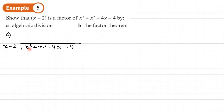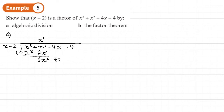x times by what gives x cubed? x squared. Then x squared times by x, and x squared times by negative 2, giving x minus 2. We underline and subtract, leaving us with plus 2x squared, so that gives us 3x squared. We bring down the 4x. How many times does x go into 3x squared? It's 3x. Multiply 3x by the divisor to get 3x squared minus 6x. Underline, subtract.